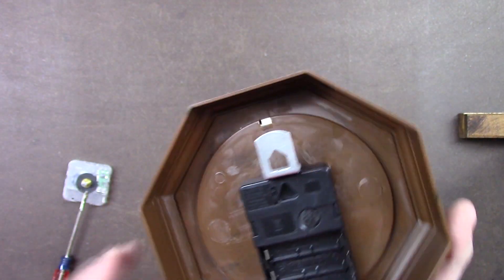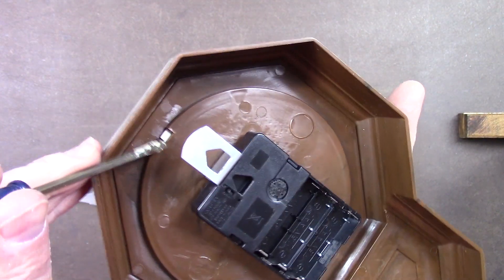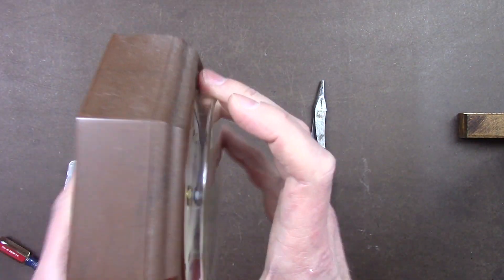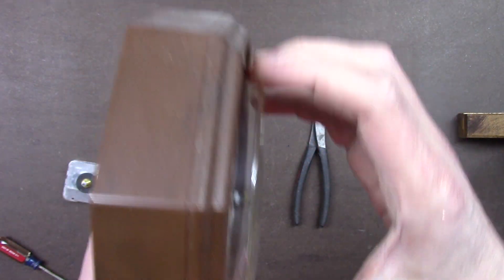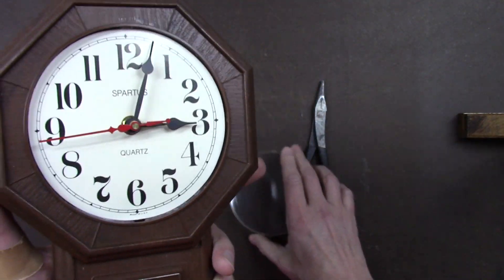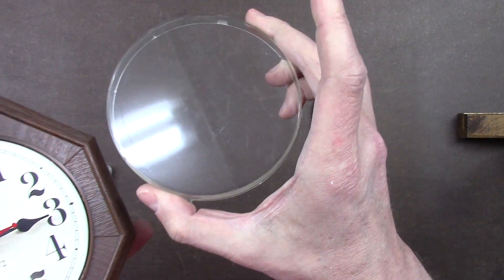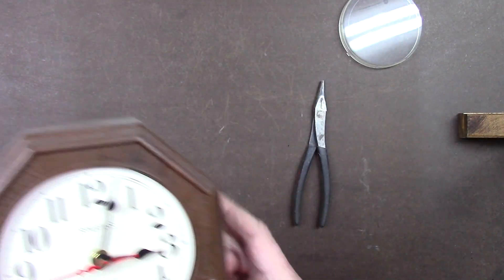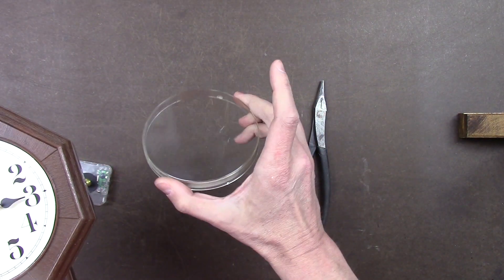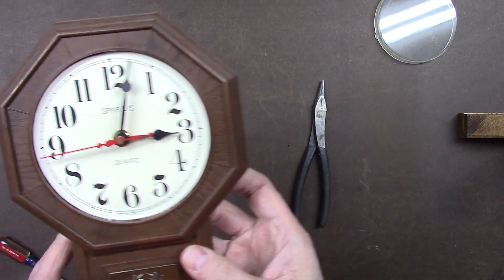There's a couple ways to do it. You can press the screwdriver in there to unlatch it, or since it's big like these old Spartus movements, you can just kind of push down on there and take the lens off. Make sure you don't have any really bad scratches on there, or you could polish it off. Polish the plastic if it's scratched.